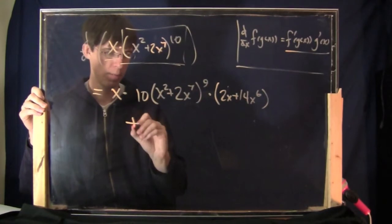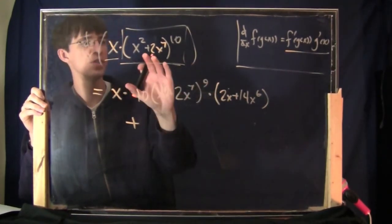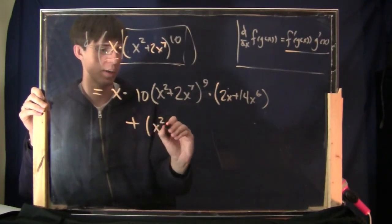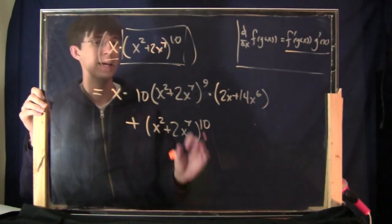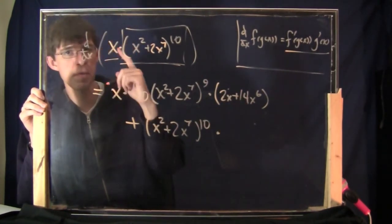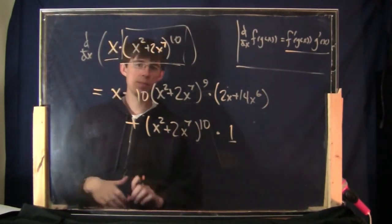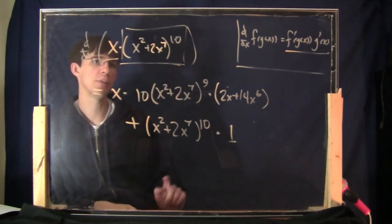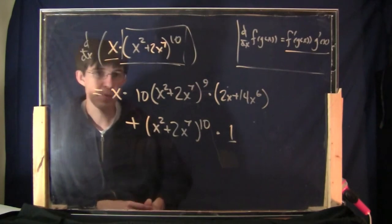Remember, this is all just part of the product rule. I go to the first thing times the derivative of the second thing — I did that much already. And then plus the second part as-is, times the derivative of the first part. The derivative of x is 1, so this is times 1. That's your answer. This is a product rule and a chain rule — it's actually the chain rule happening inside of the product rule. But sometimes that's what it takes.